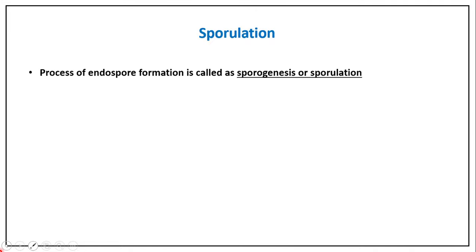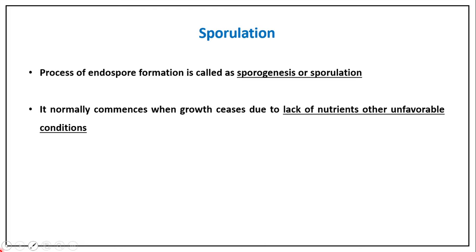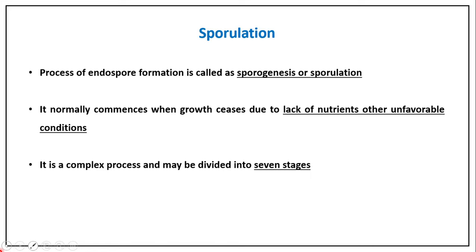The process of endospore formation is known as sporulation, also called sporogenesis. It normally commences when growth changes due to lack of nutrients. Sporulation begins under unfavorable conditions, most commonly represented by nutrient deficiency. It is a complex process divided into seven stages.